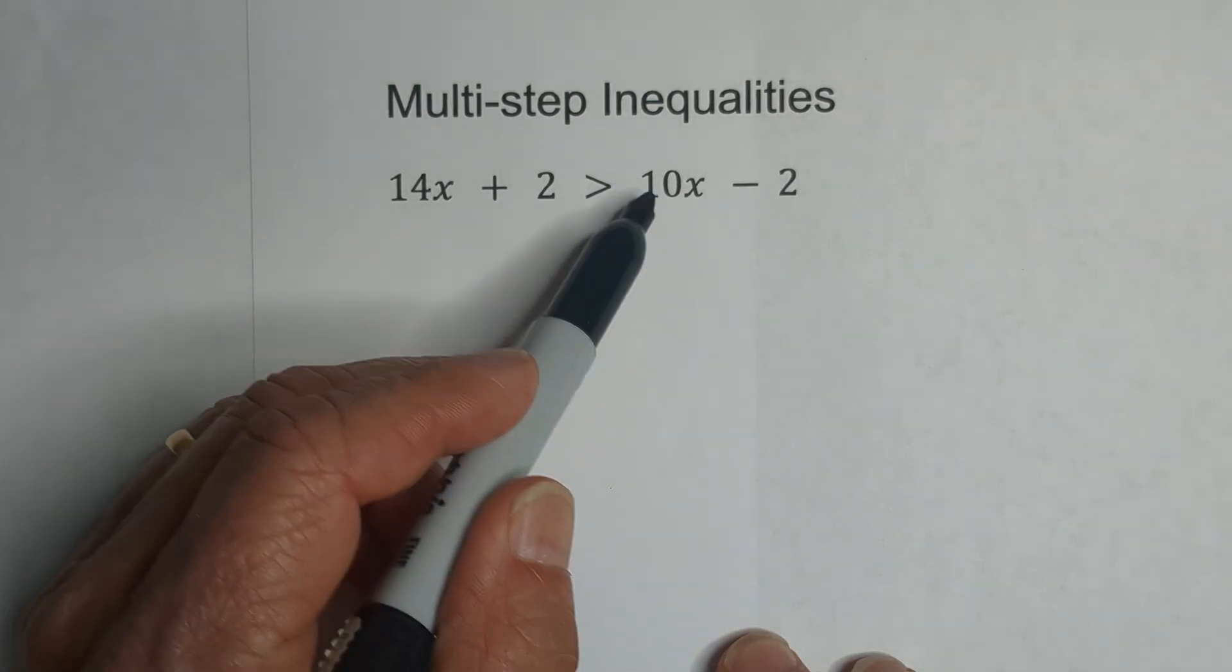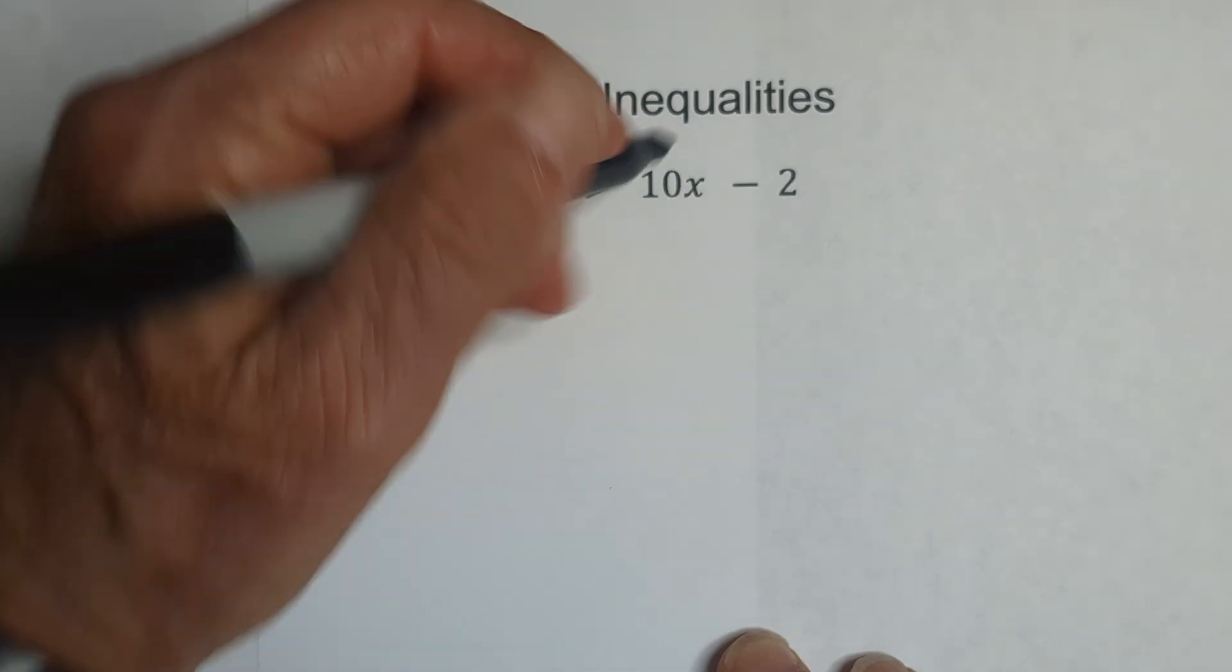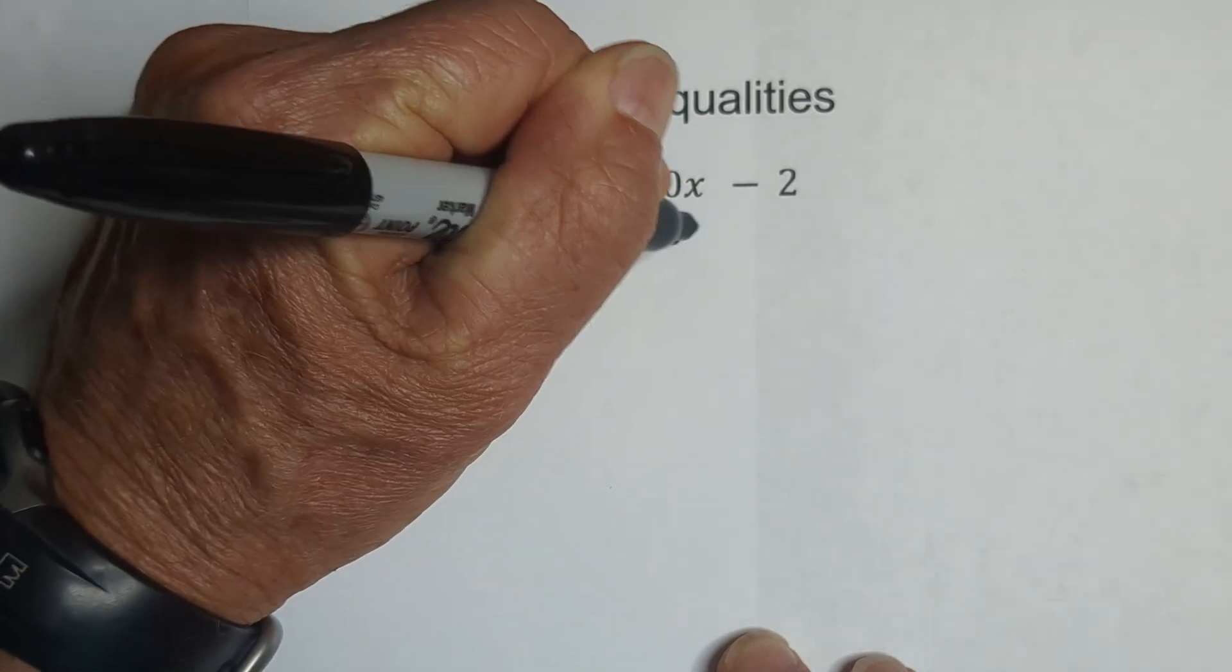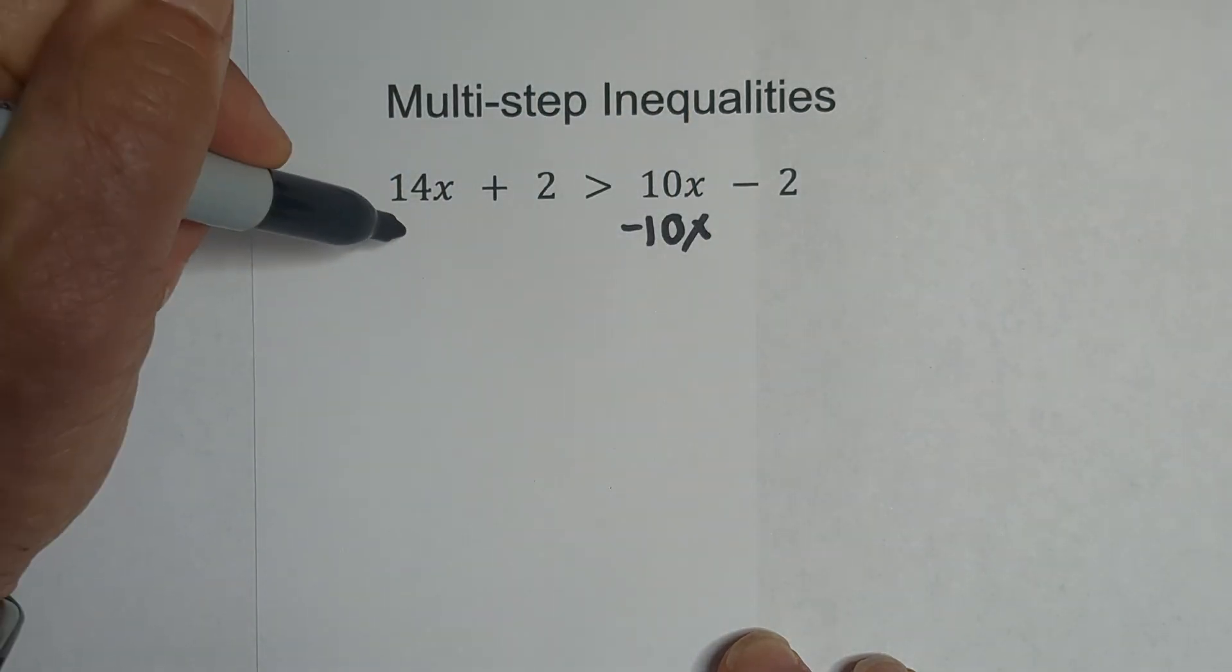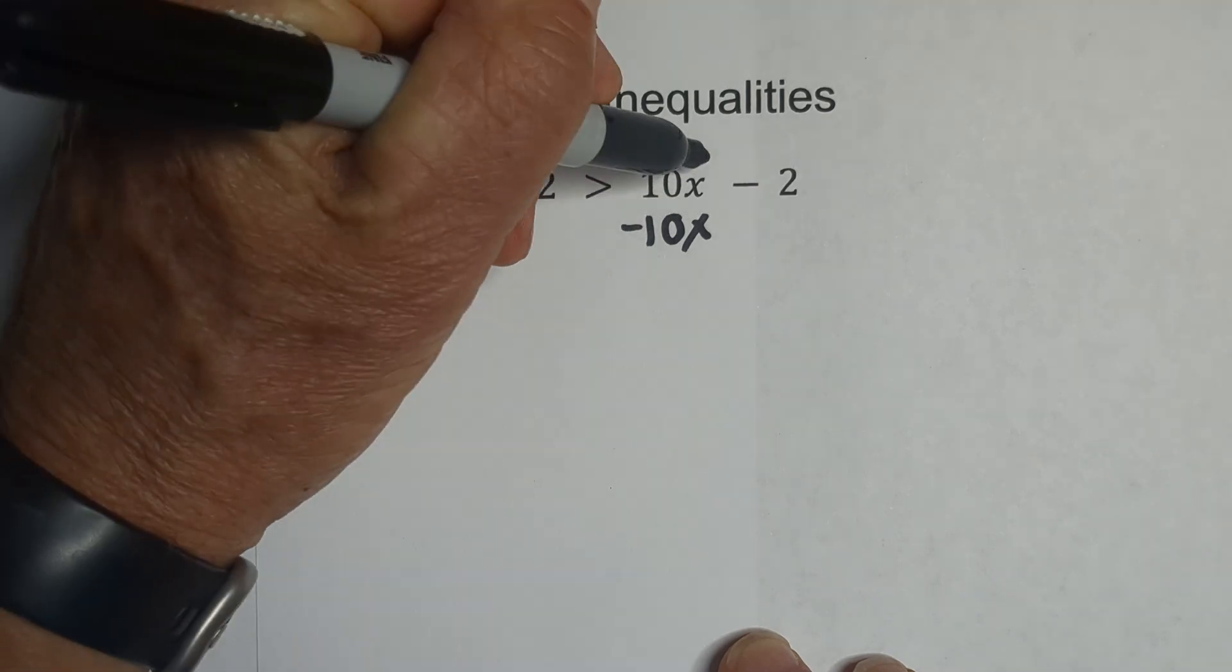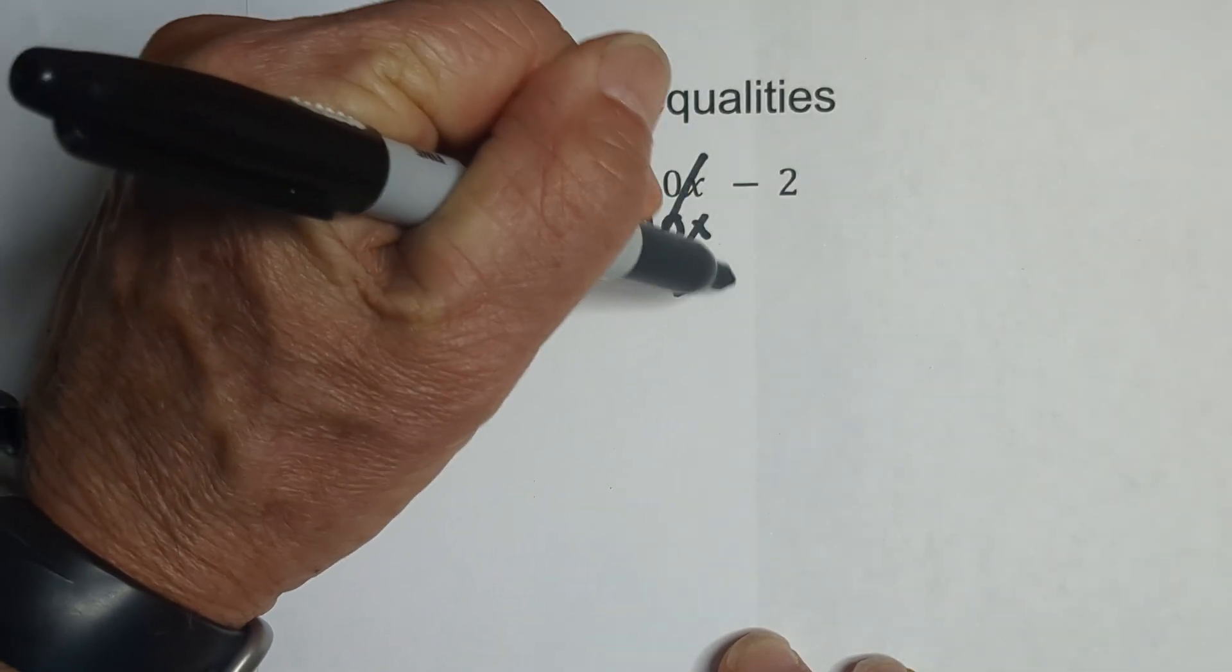So what I'm going to do is, let's begin with the 10x and we can subtract 10x from both sides. Now when we do that, these cancel and we'll bring down the negative 2.